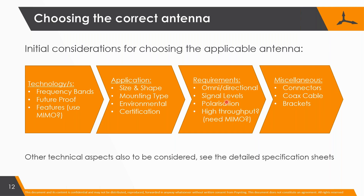Then the requirements: do you need to receive from all directions? What are the signal levels — is it very low or reasonable? Polarization. And how high a throughput do you need? I'm going to show that, and it's quite an important thing. You don't always need MIMO, even if the technology requires or uses MIMO — you can get quite satisfactory performance if you don't need very high data throughput.